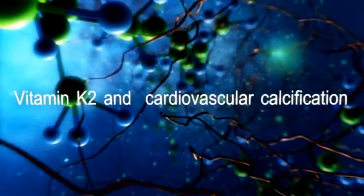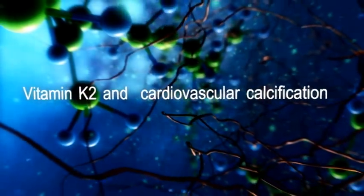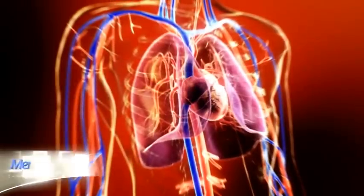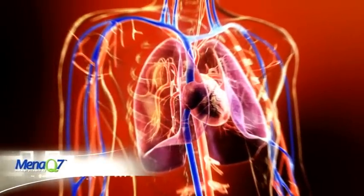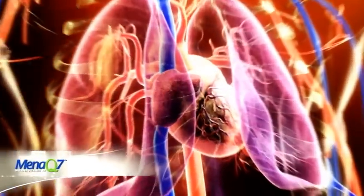Our cardiovascular system is built out of a heart and vascular system. The heart is a beating organ pumping blood throughout our body, supplying it with oxygen and nutrients.